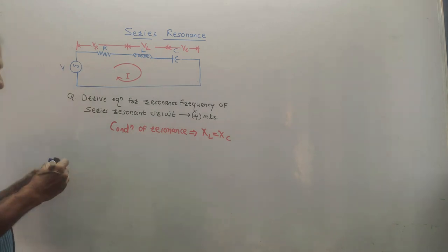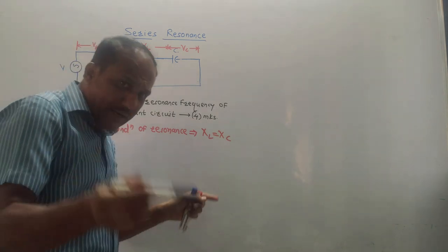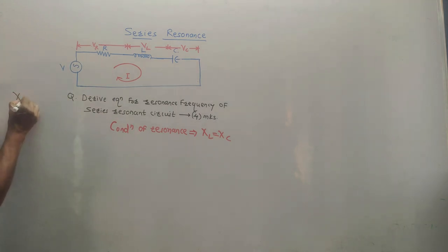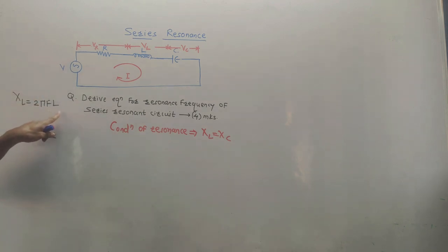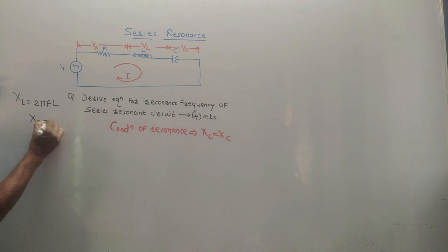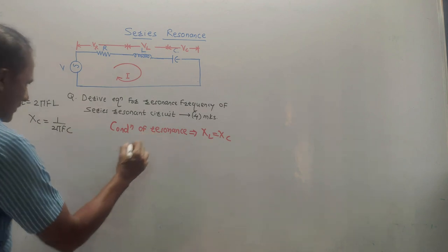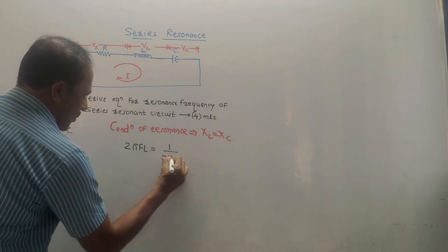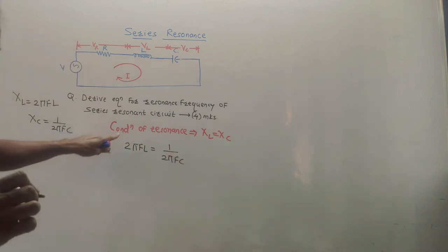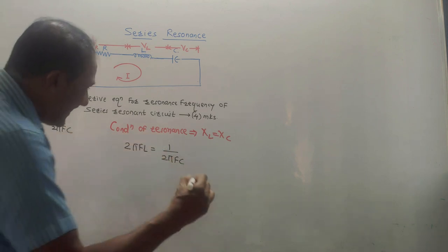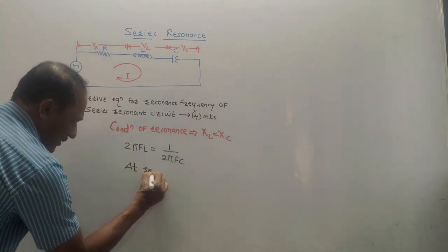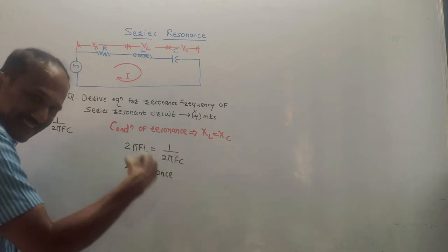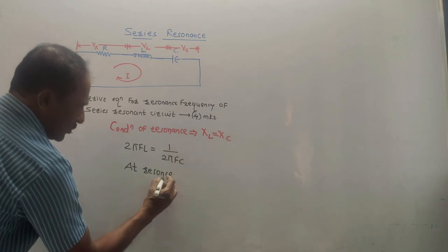You need to remember two simple formulas: XL = 2πFL, where 2π is constant, F is frequency, and L is inductance; and XC = 1/(2πFC), where C is capacitance. Substituting these, we get 2πFL = 1/(2πFC). At resonance, we denote the frequency as FR — the suffix R indicates resonance frequency — so every F is replaced by FR to get the new equation.